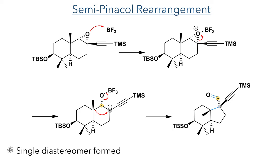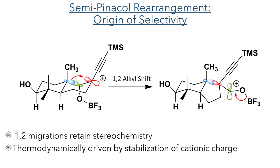This reaction works by the thermodynamic drive to stabilize the positive charge generated by the opening of the epoxide ring. By the migration of a carbon-carbon bond in the same plane as the empty orbital, it allows the empty orbital to end up adjacent to the oxygen atom, which is best suited to stabilize it due to its electron density. As this happened through a 1,2-alkyl shift, the stereochemistry was retained, as the bond migration process does not allow for any free rotation of the intermediate.